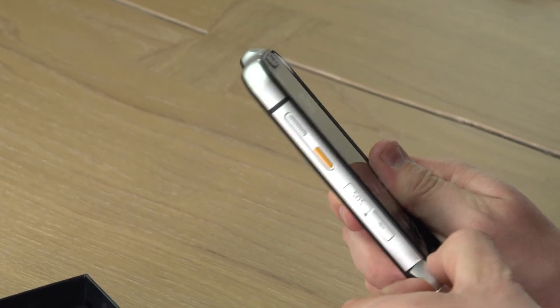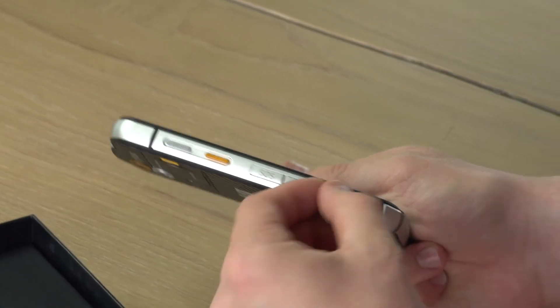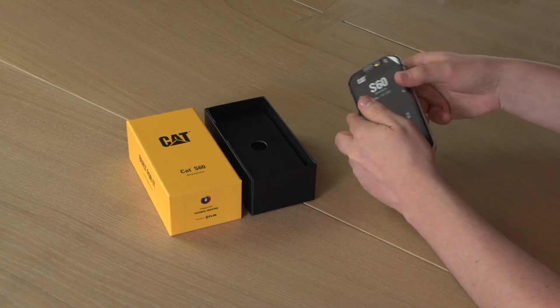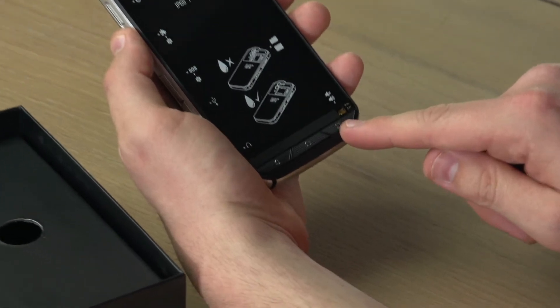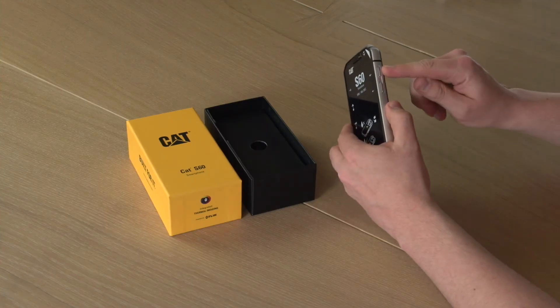Under this flap here we've also got the three and a half millimeter headphone jack, physical Android keys, so home, recent apps and the back key and the volume rockers on the side here.